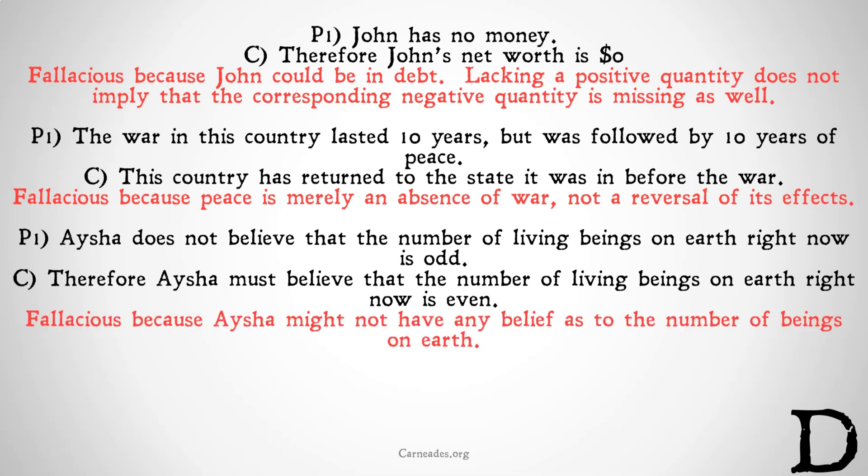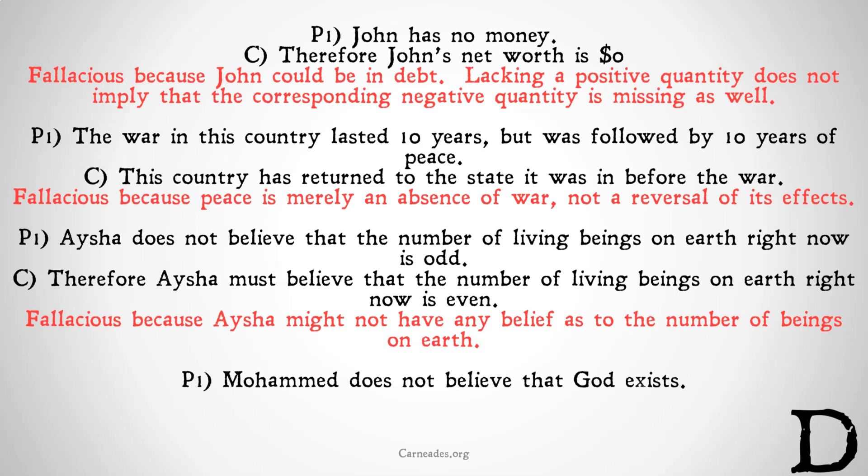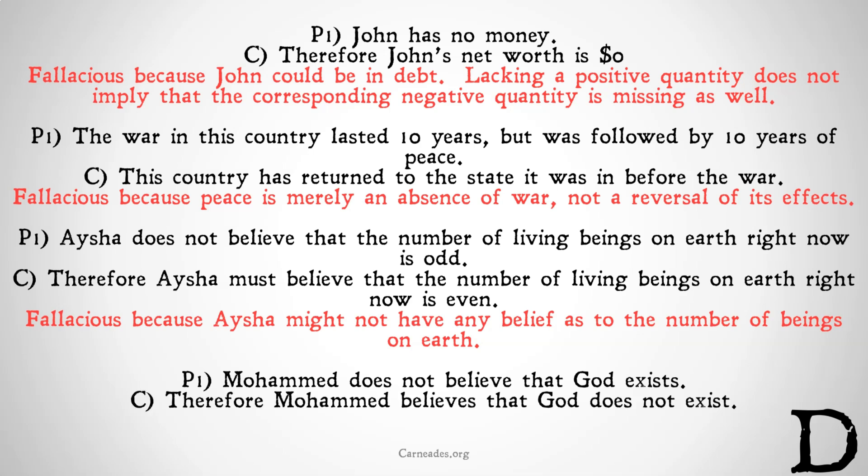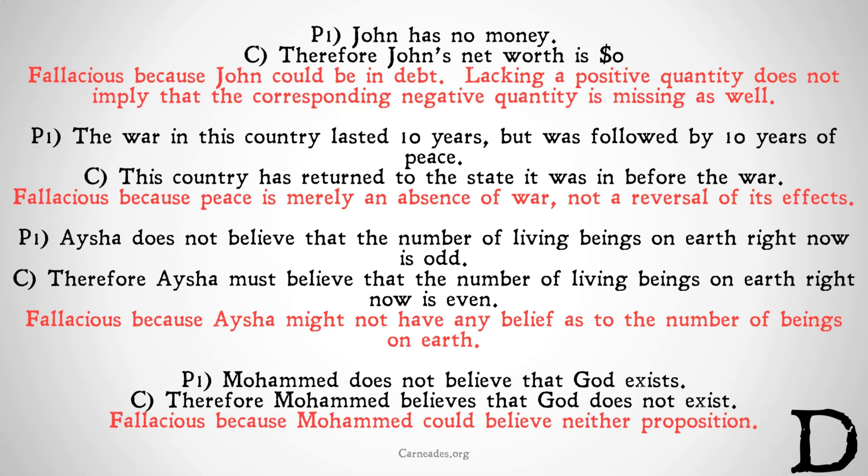Once again, this is fallacious because Aisha might not have any belief as to the number of beings on earth, particularly because it's unlikely she could have a justified belief about whether it is odd or even — so it's very likely she would suspend belief on either proposition. Mohammed does not believe that God exists. Therefore, Mohammed believes that God does not exist. This is clearly fallacious because Mohammed could believe neither proposition.